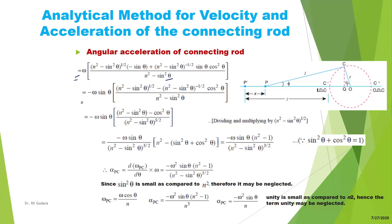Multiplying and dividing by √(N² − sin²(θ)) and rearranging, we get: −sin(θ)·[(N² − sin²(θ)) − cos²(θ)] / (N² − sin²(θ))^(3/2). Since sin²(θ) + cos²(θ) = 1, this simplifies to: −ω·sin(θ)·(N² − 1) / (N² − sin²(θ))^(3/2).